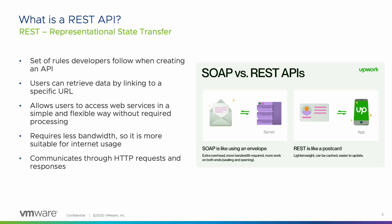REST determines what the API looks like. It stands for Representational State Transfer. It is a set of rules that developers follow when creating an API. One of these rules states that you should be able to get a piece of data, called a resource, when you link to a specific URL. REST APIs allow users to access web services without a lot of overhead processing or bandwidth, so they are desirable for internet usage. Each URL is called a request, while the data sent back to you is called a response.